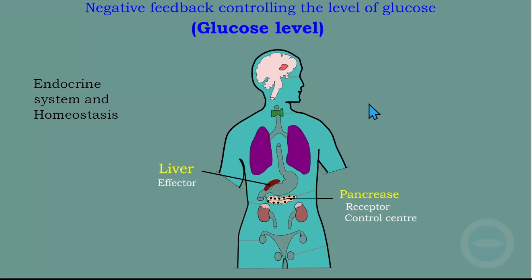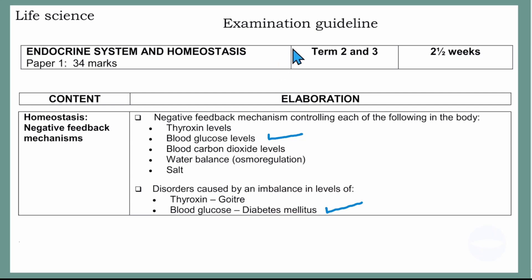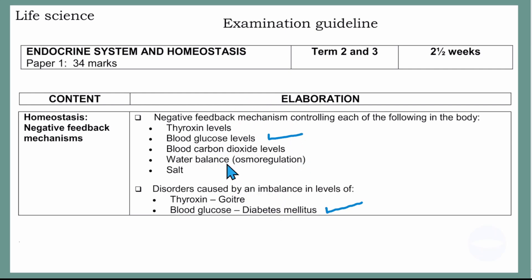Like every day with all our videos, we show the examination guideline. This is the guideline — it's for life sciences. We are on endocrine system and homeostasis. Today we will be elaborating on the negative feedback mechanism controlling blood glucose levels, and I will also explain the disorder caused by the imbalance of blood glucose, which is diabetes mellitus.